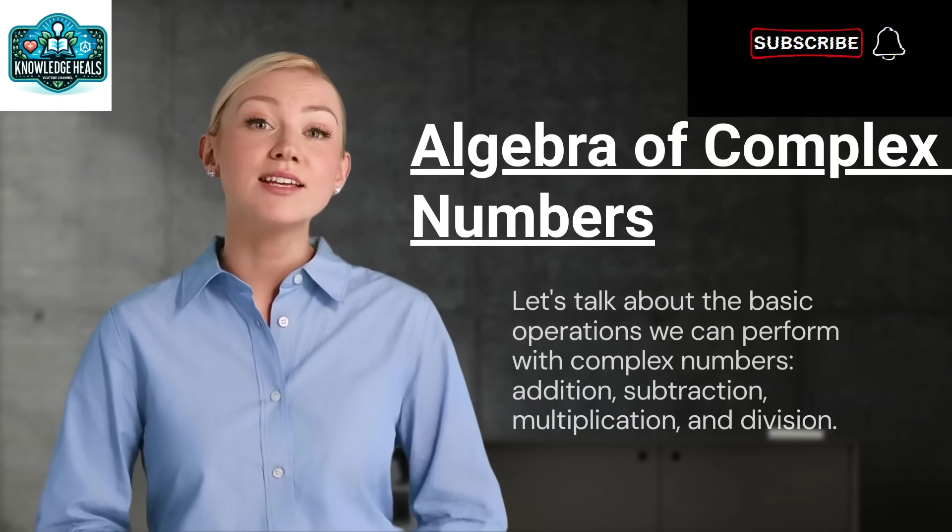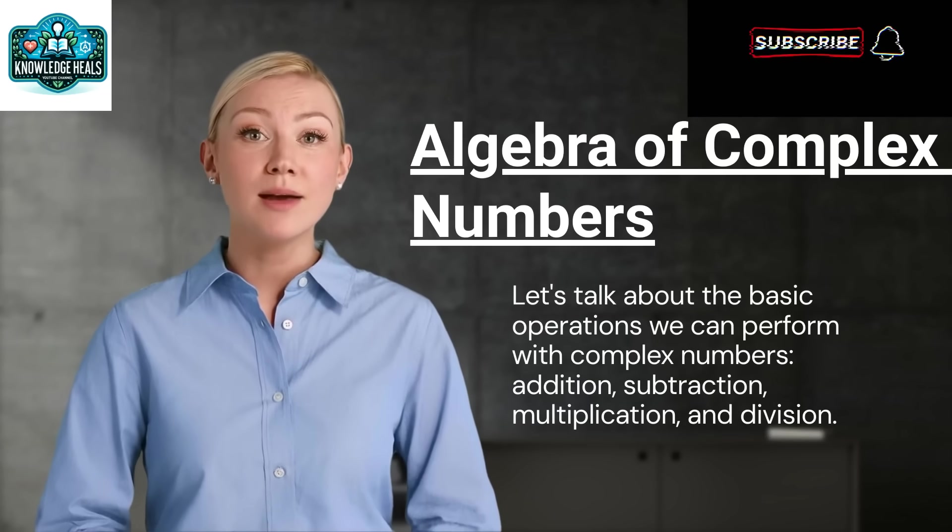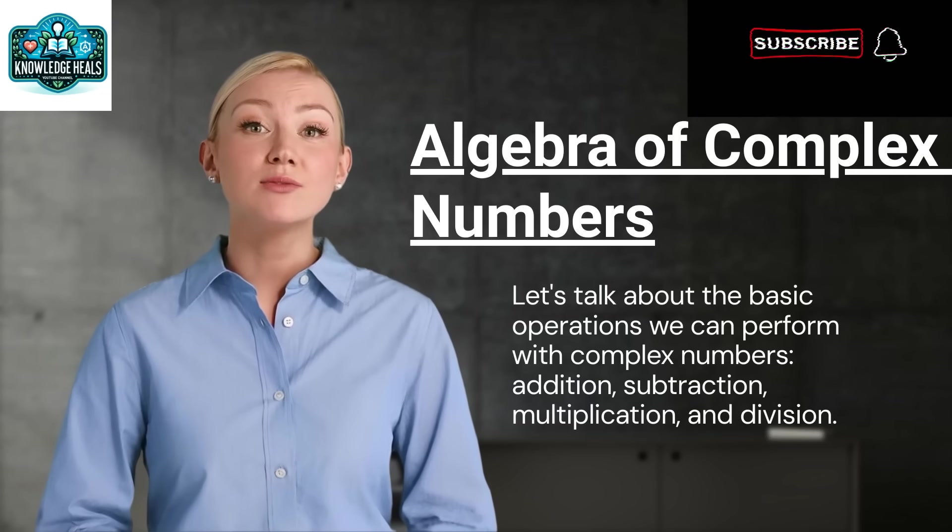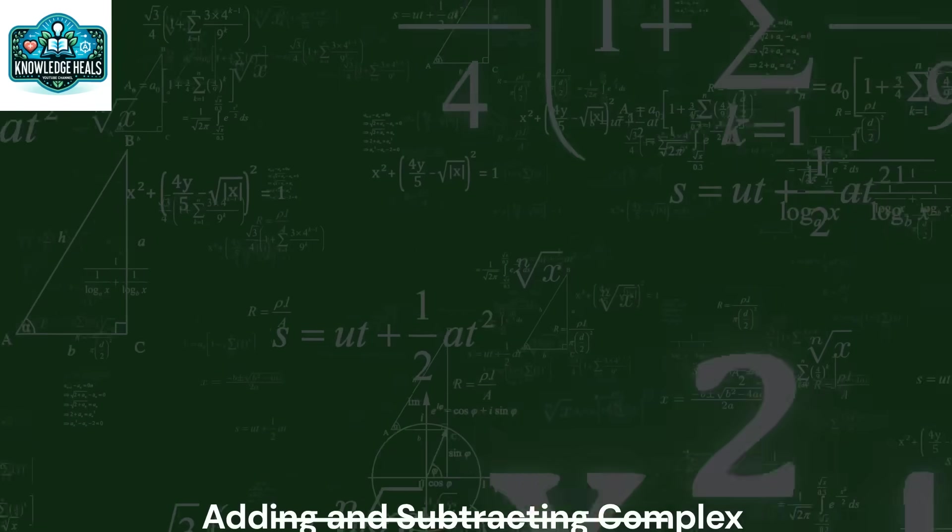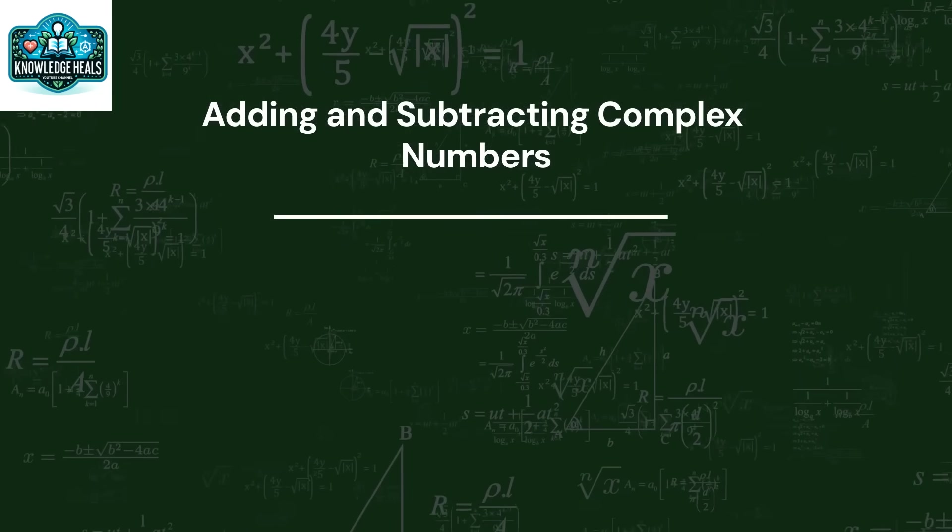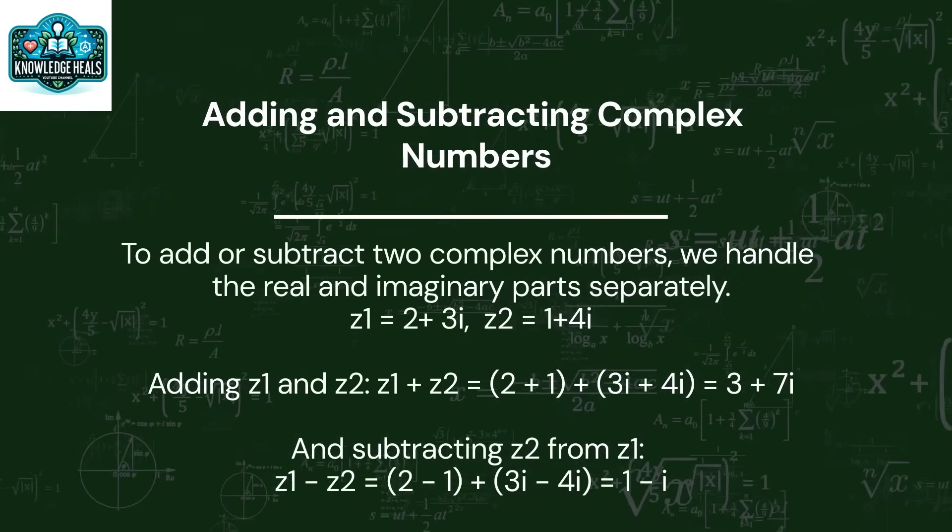Let's talk about the basic operations we can perform with complex numbers: addition, subtraction, multiplication, and division. To add or subtract two complex numbers, we handle the real and imaginary parts separately.